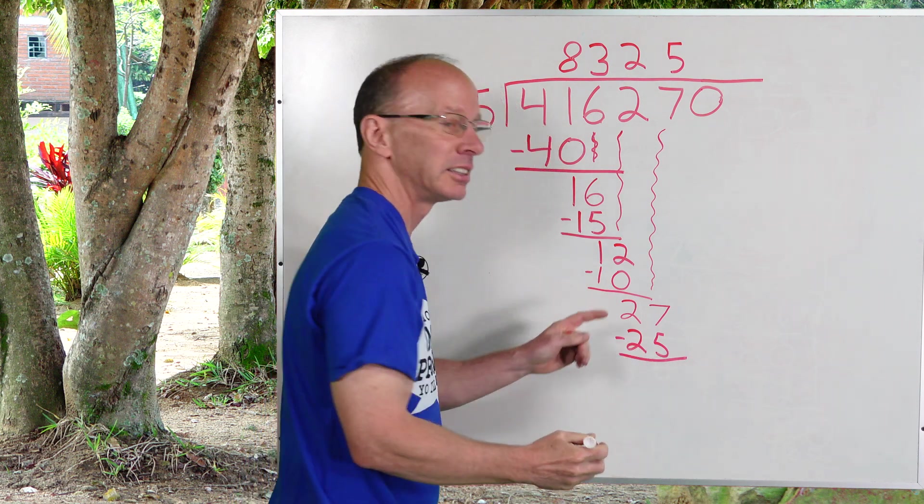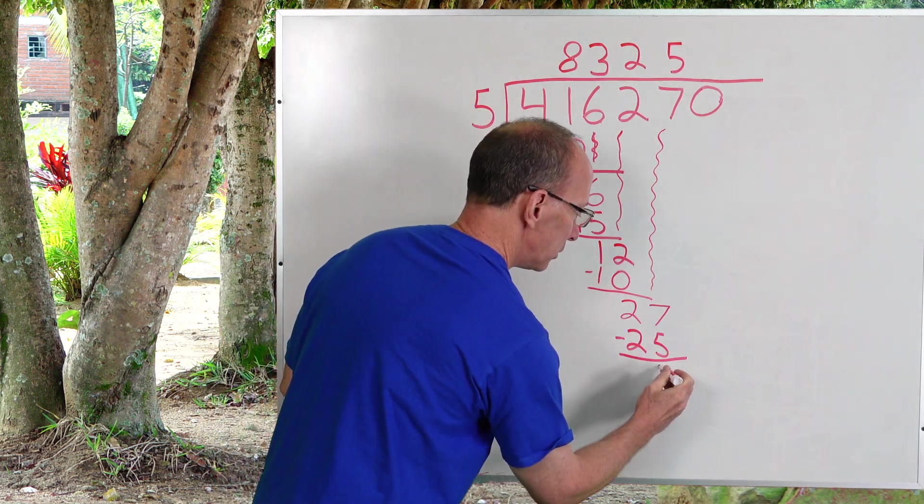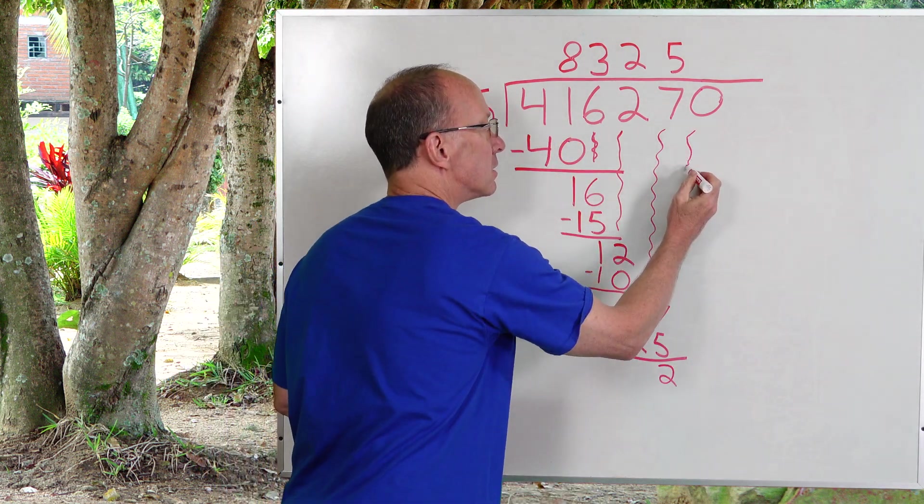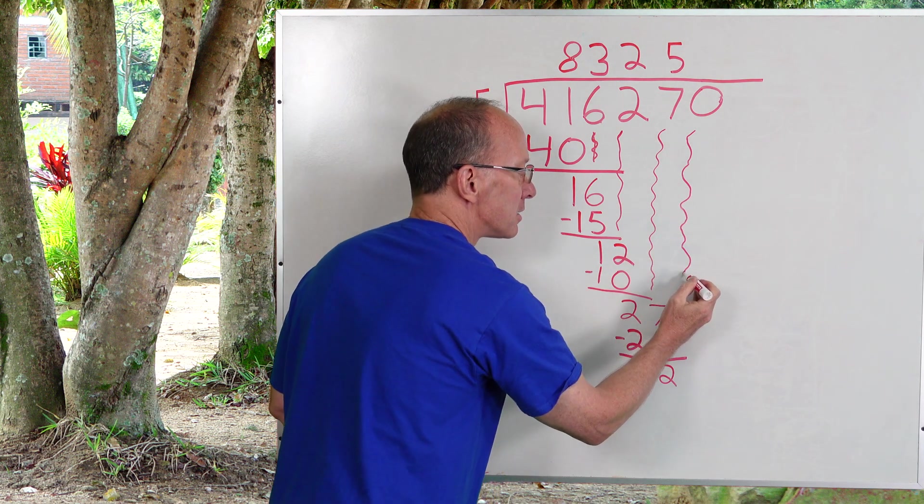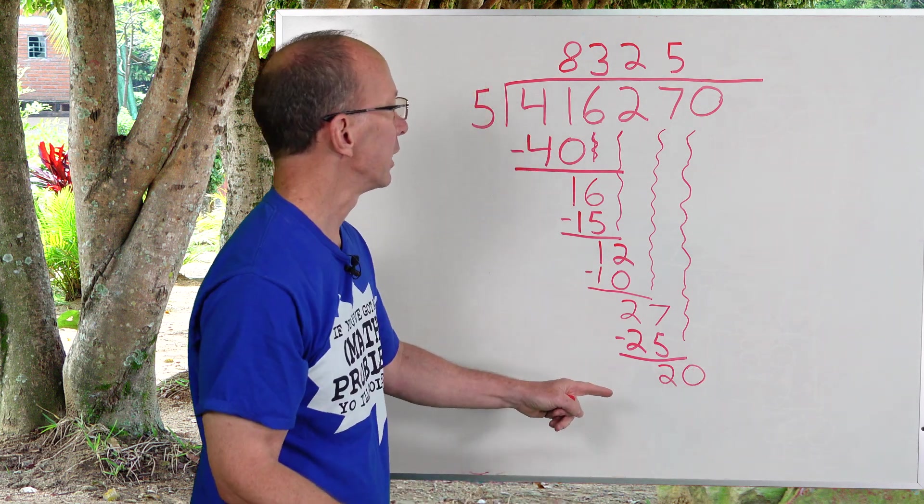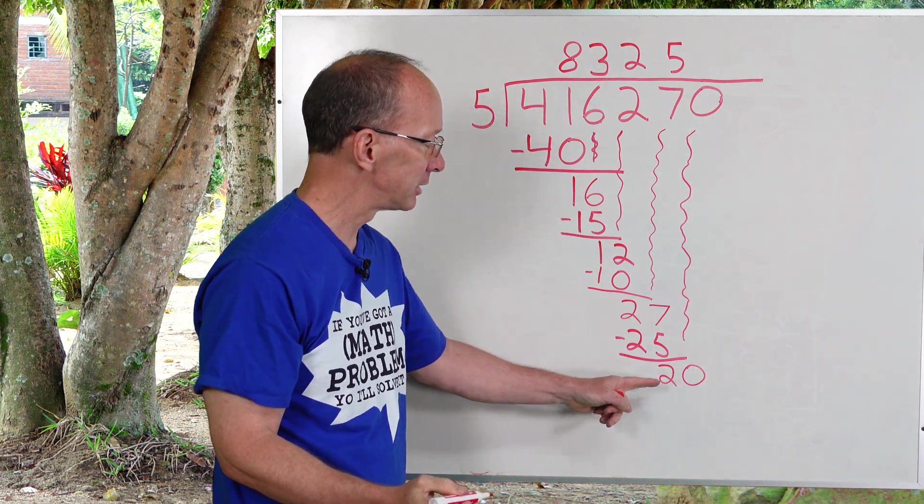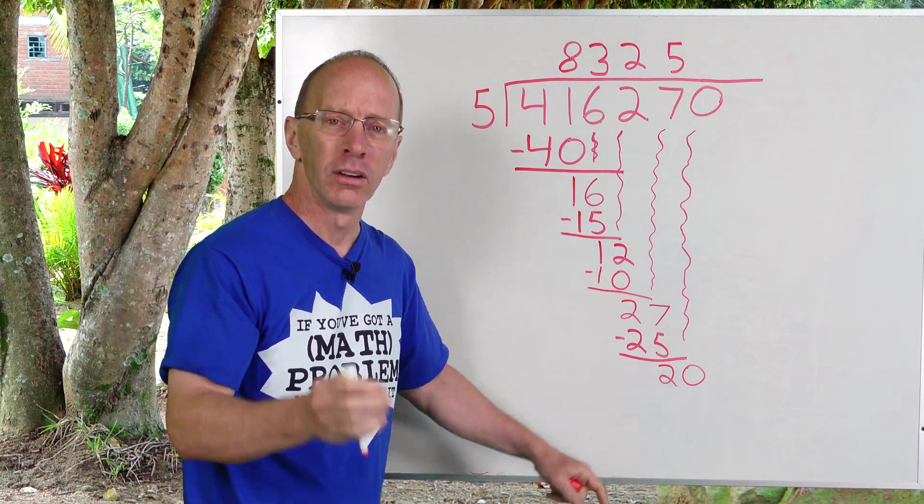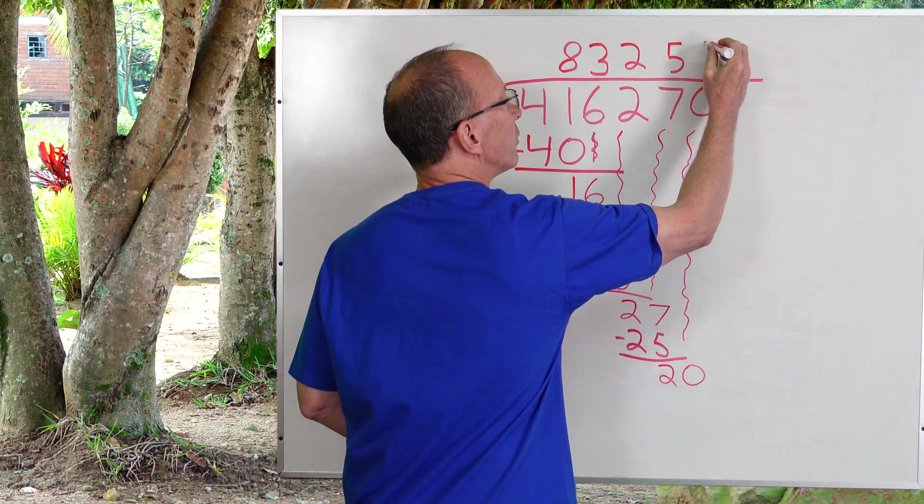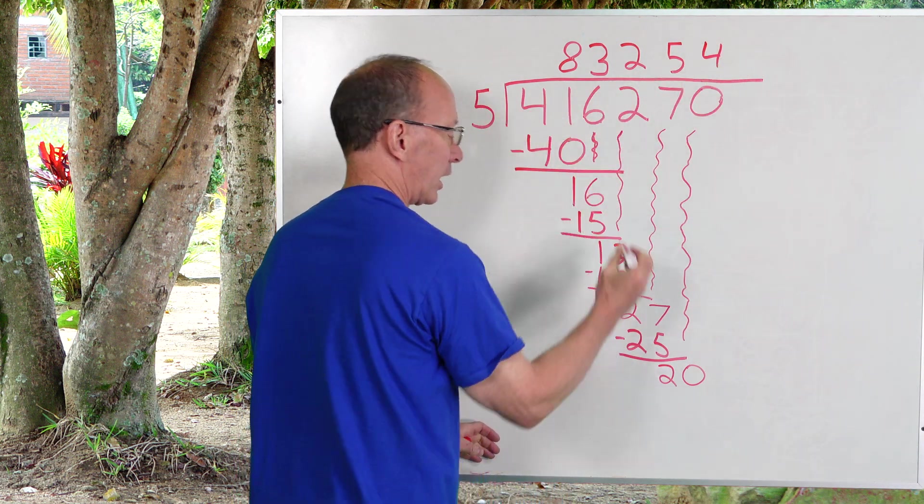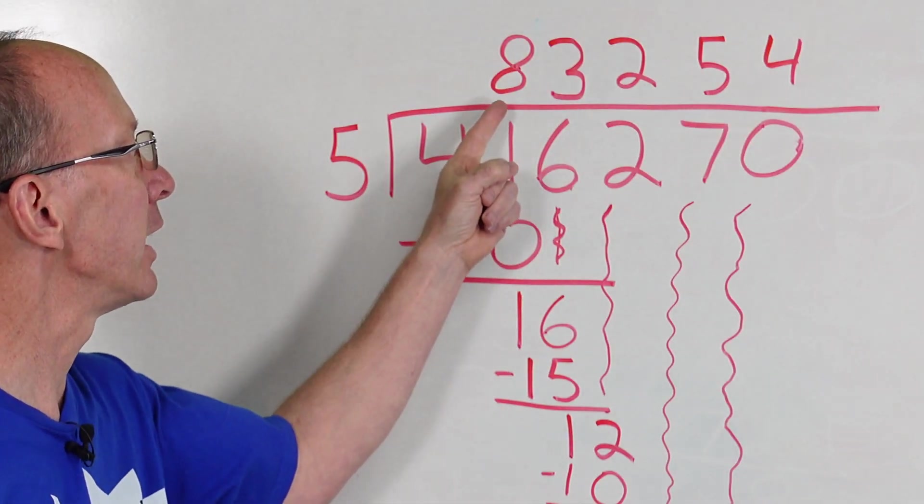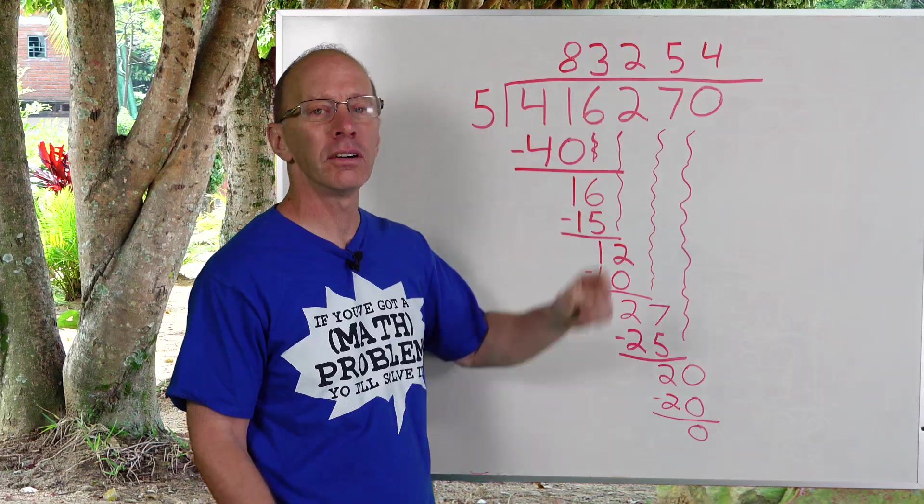Subtract. Seven minus five, two. Put the two right here. Bring the next number down. 20. Now I'm taking a look at 20. How many times can I put 5 into 20? 5, 10, 15, 20. Four times. There's going to be no remainder. So I'm going to put four right here. Four times five is 20. Zero, no remainder. And here's our final answer, 83,254.